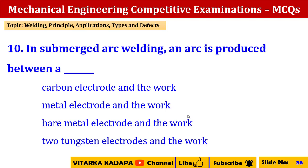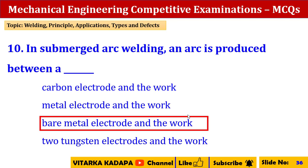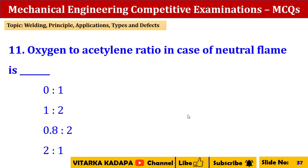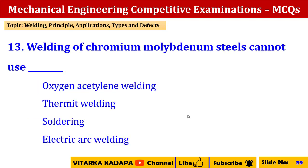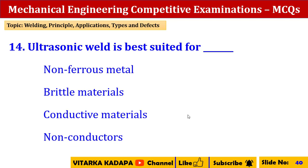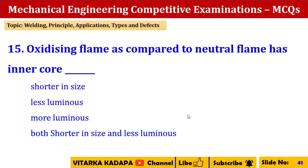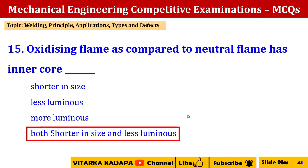In submerged arc welding, an arc is produced between a bare metal electrode and the work. The oxygen-to-acetylene ratio in case of neutral flame is 1 to 1. An example of fusion welding is gas welding. Welding of chromium molybdenum steels cannot use electric arc welding. Ultrasonic welding is best suited for brittle materials. Oxidizing flame compared to neutral flame has an inner core that is both shorter in size and less luminous.